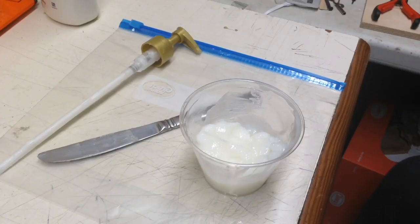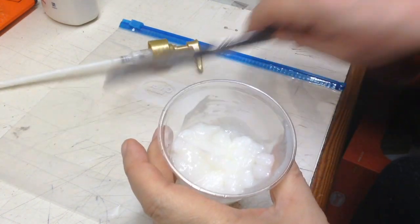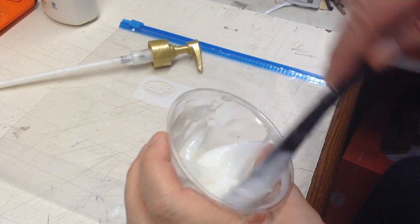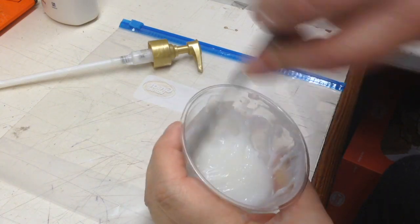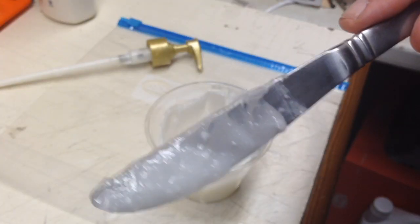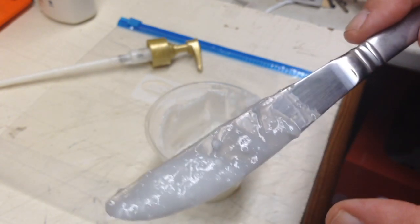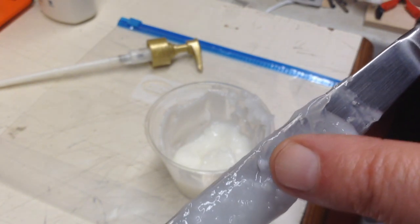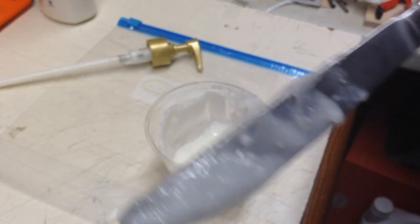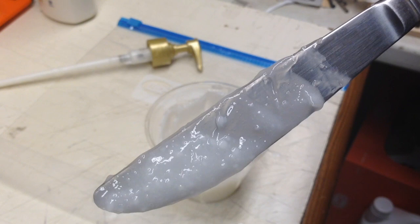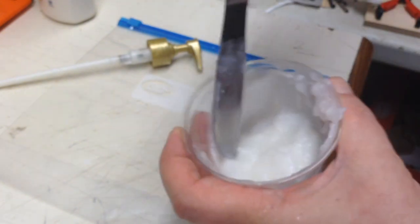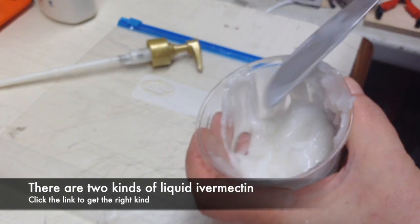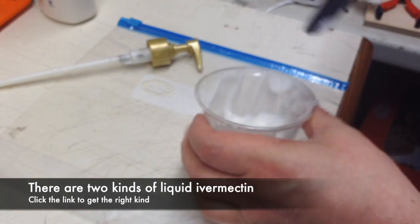I've been stirring this for about five minutes or so. What seems to work nicely is to mush it against the side like this over and over because you can see little bits of white lotion, little lumps. So if you smush that against the side like that, it tends to mix with the liquid.